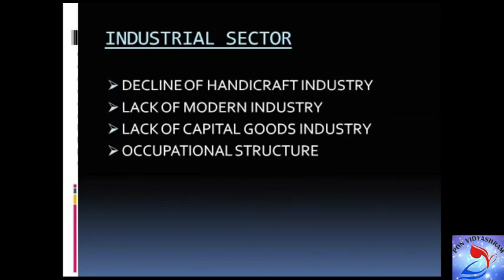The next is the lack of modern industry. Modern industries began to develop during the second half of the 19th century, but progress was exceedingly slow and stunted. Up to the very end of the colonial period, the level of industry and technology remained low. During the 19th century, industrial development was confined to cotton and jute textile mills. The iron and steel industry developed after 1907, while sugar, cement, and paper industries came up only in the 1930s.